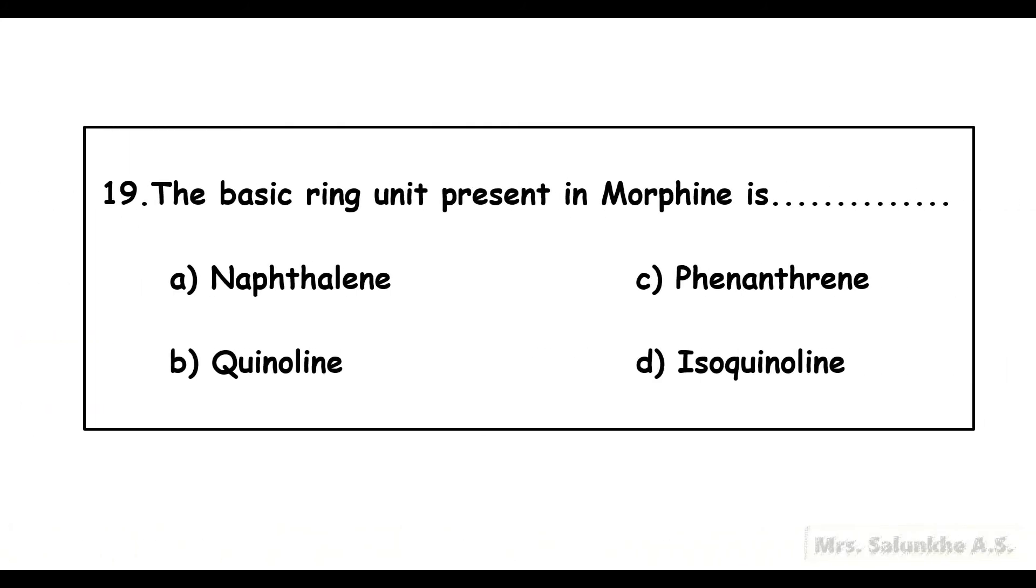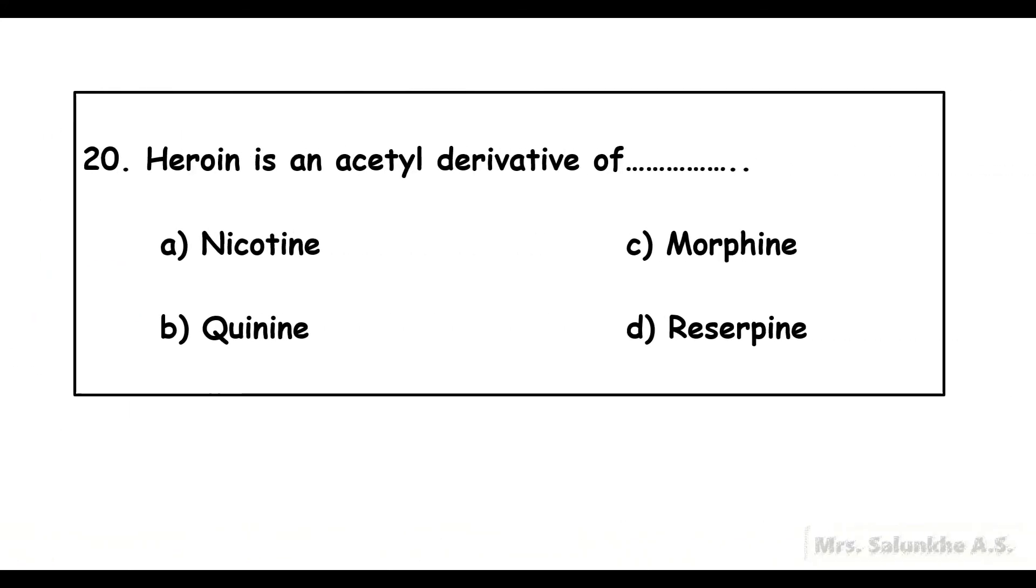The basic unit present in morphine is phenanthrene. Heroine is an acetyl derivative of morphine.